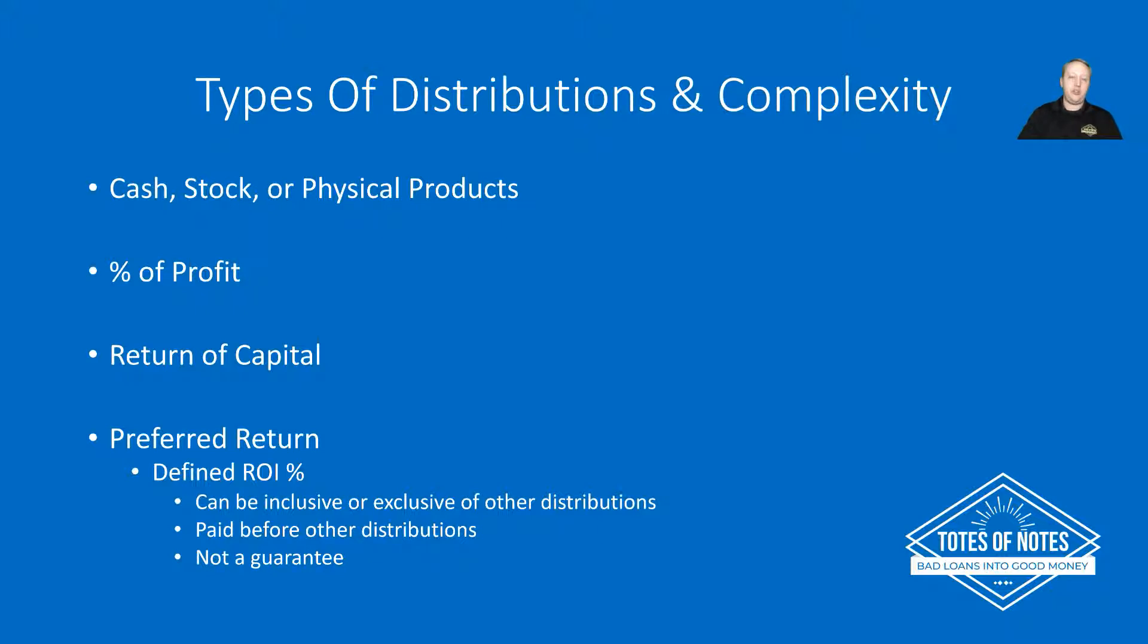Another common type of distribution will be return of capital. So what will happen is everyone's getting paid until they're reimbursed their initial capital investment. If everyone invested a hundred thousand dollars and there's 10 members, then the first million dollars in profits is going to be distributed evenly to all the members until they've received their initial investment back. And you'll probably have some type of schedule set up because you wouldn't necessarily want to divide up every $5,000 in profit. You may want to keep that in the business to pay for further expenses.